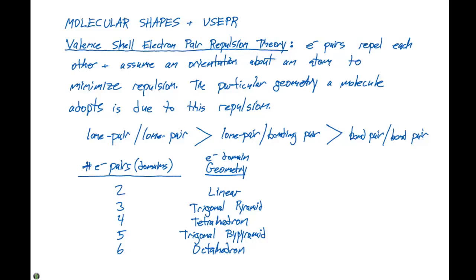In addition to the electron pair geometry, we can determine the hybridization. If we have a linear electron domain geometry, we have SP hybridization. If we have a trigonal planar geometry, we have SP2 hybridization. If we have a tetrahedron, it's SP3 hybridized. If we have a trigonal bipyramid molecule, there's SP3D hybridization. And for an octahedron, we have SP3D2 hybridization.